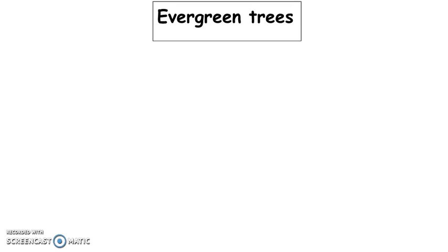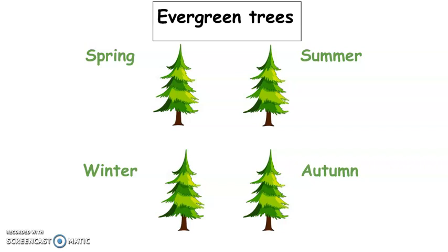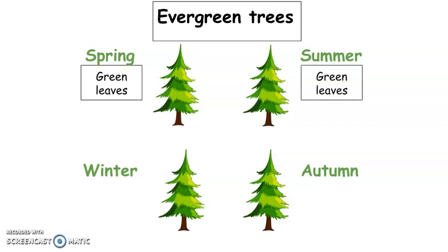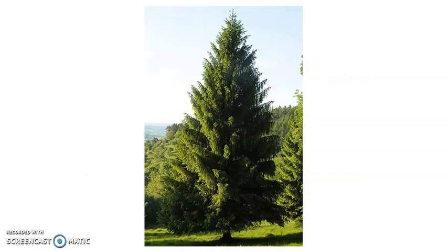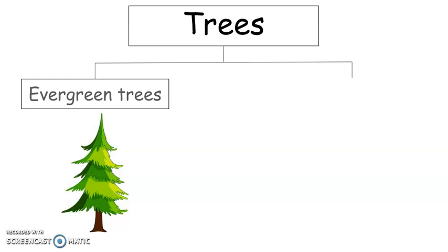First, there are evergreen trees. Evergreen trees are the same all year. They are always green. They always keep their leaves. That means in spring, they have green leaves. In summer, they have green leaves. In autumn, they have green leaves. And in winter, they have green leaves. An evergreen tree is green all through the seasons. Here is an evergreen tree with all its green leaves — it is like this all year. So that is evergreen trees: they are always green and never lose their leaves.